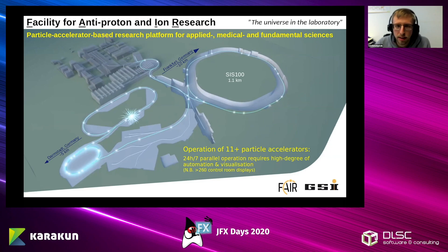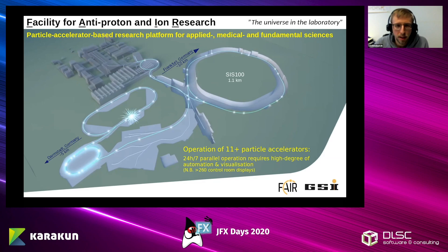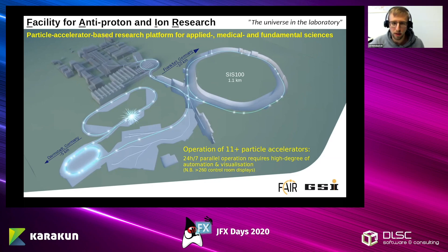FAIR recreates what we call the universe in the laboratory — not the actual universe, but conditions like that — through a cascade of more than 11 particle accelerators, each consisting of a large number of magnets, accelerating RF cavities, and other devices required to create, shape, and accelerate these beams. Our experiments have very demanding beam property constraints, and this is the reason why we need a very powerful charting library to study them.